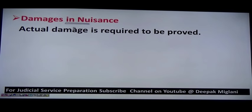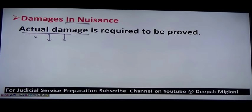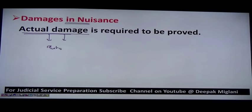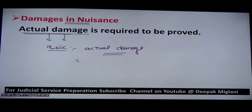Regarding damages in nuisance: actual damage is required to be proved in court of law for claiming compensation. There should be some substantial interference and substantial damage. In the case of public nuisance, the plaintiff can bring an action in tort only when he proves special damage to him. In private nuisance also, damage is essential, but in public nuisance actual damage must be proved in court of law in order to get compensation.